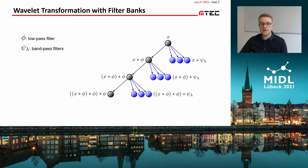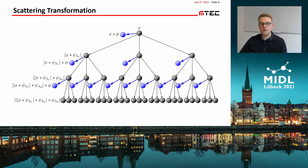Ordinary wavelet transforms are usually calculated by applying a filter cascade with low-pass filters phi and bandpass filters psi. The bandpass filters are only applied to the input image and previously low-passed features. Scattering transformations are quite similar as they also rely on a wavelet basis. However, the bandpass filters are applied to all intermediate feature maps.